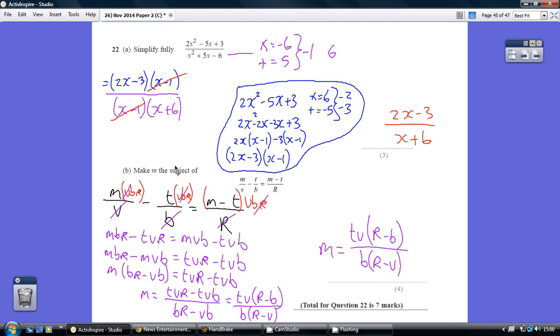For part B, to make M the subject, I think the best thing to do is to kick off by getting rid of it being on two layers. So we need to undo a dividing by V, B, and R by multiplying each term by VBR. That's what I've done here in red.